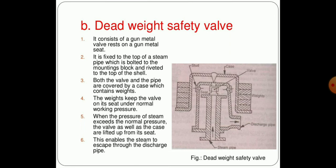Both the valve and the pipe are covered by a casing which contains the weights. The weights keep the valve on the seat under normal working pressure. When the pressure of steam exceeds the normal pressure, the valve as well as the casing is lifted up from the seat, which enables the steam to escape through the discharge pipe. As soon as the pressure falls back, the weights exert pressure and the valve retains its original position on the seat, which blocks the steam from escaping the container.